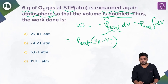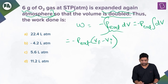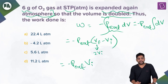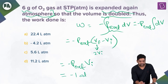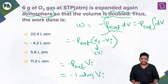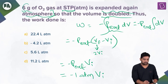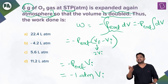We know V_final = 2V_i, so ΔV = 2V_i − V_i = V_i. Therefore work done = −P_external × V_i = −1 atm × V_i. If we know the initial volume in liters, we're done.